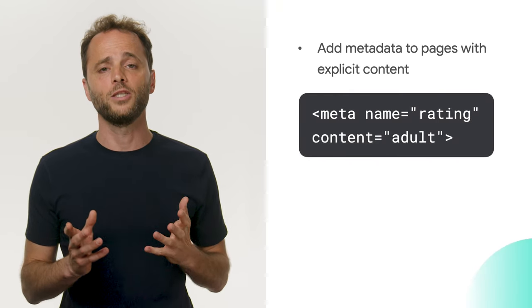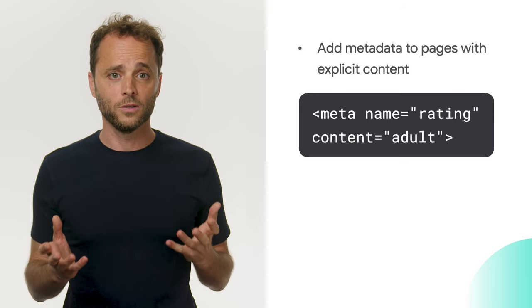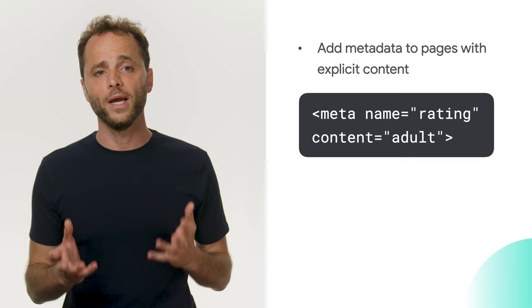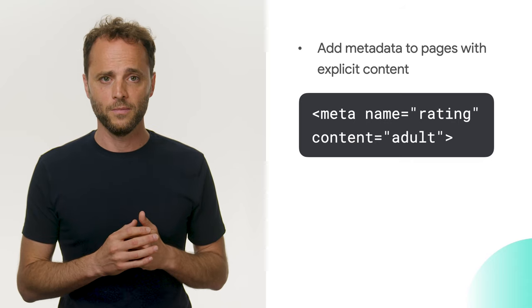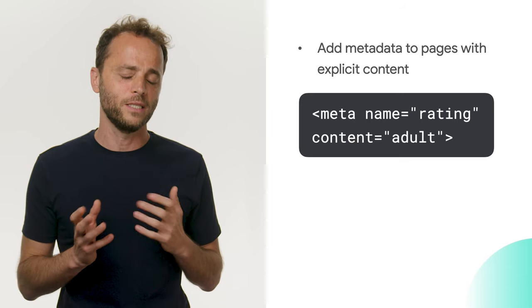We have four recommendations for site owners with regards to Safe Search. Following these recommendations will enable Google to better understand which parts of your site can be classified as explicit. First, add metadata to pages with explicit content. One of the signals our systems use to identify pages with explicit content is the rating meta tag shown on screen. We recommend adding this meta tag to any page with explicit content.